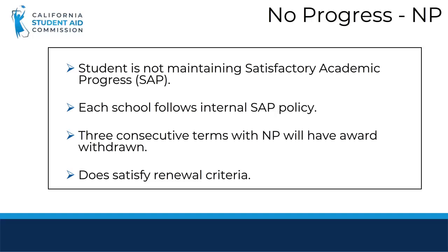NP — The NP code indicates the student is not maintaining satisfactory academic progress, also known as SAP. Each school will have its own SAP policy. Not meeting SAP means a student is not eligible for a payment for that particular term. The commission does not withdraw an award when NP is reported. It takes three consecutive terms of NP being reported before an award is withdrawn. So if a student does not meet SAP for two terms but then improves and receives a payment for a term, the SAP counter will reset. This code does satisfy the renewal criteria.